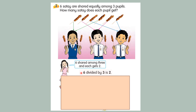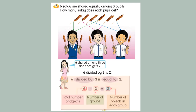Means that 6 divided by 3 is 2. 6 divide 3 equal to 2. 6 means total has 6 sate. 3 means number of groups — I have 1, 2, and 3, meaning 3 pupils. And each pupil gets 2 sate.